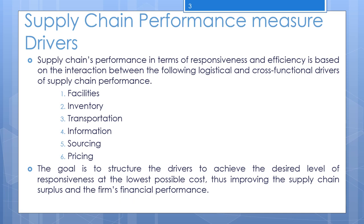Product variety measures the number of products and product families processed in a facility — processing cost and flow times are likely to increase with product variety. Volume contribution measures the fraction of total volume processed by a facility that comes from the top 20 percent of customers. Processing idle time measures the fraction of time that the facility was processing units, being set up, unavailable because it was down, or idle because it had no units to process. Average production batch size measures the average amount produced in each production batch. Production service level measures the fraction of production orders completed in full and on time.